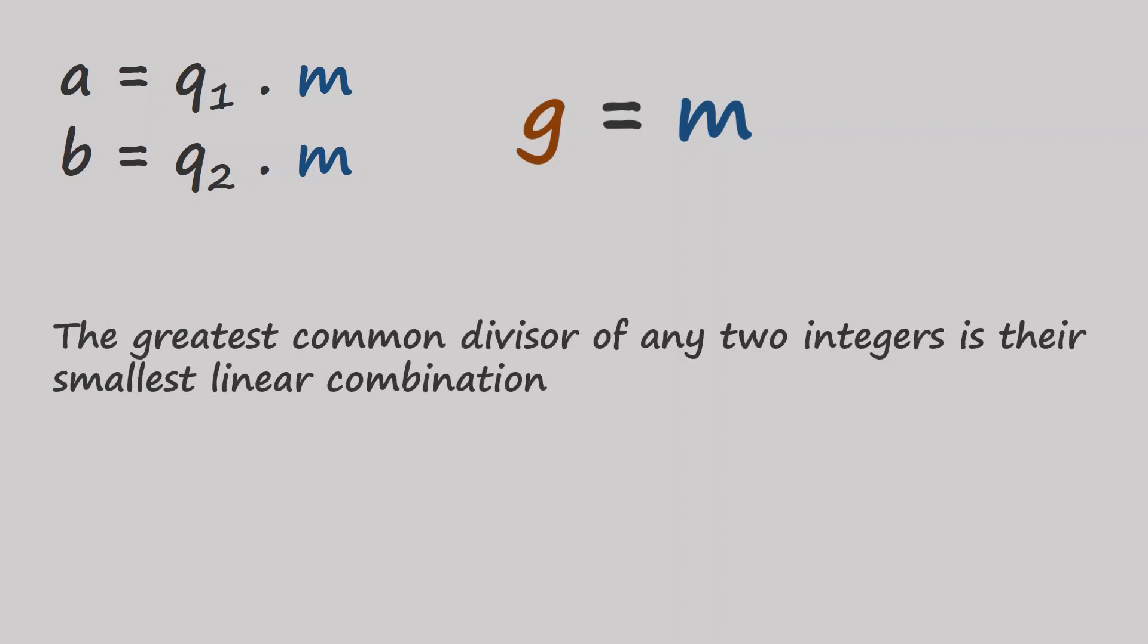What does that tell us about our puzzle? Well, because all linear combinations are multiples of g. And that g itself is a linear combination of a and b. This means that we can only get amounts of water in our puzzle that are multiples of g. We were able to get 4 liters of water using the 3 and 5 liter flasks. Because the greatest common divisor of 3 and 5 is 1. And 4 is a multiple of 1. Thank you for watching.